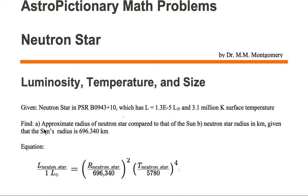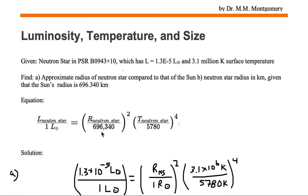We would like to find: A, the approximate radius of the neutron star compared to that of the sun, and B, the neutron star radius in kilometers, given that the sun's radius is 696,340 kilometers.